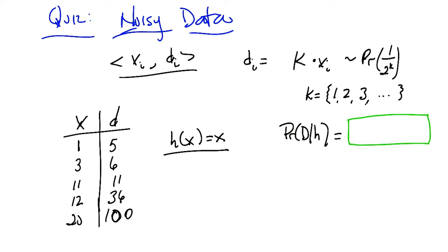Okay, how do you figure that out? Because the k that we would need, the multiplier would have to be 5, and so the probability for that multiplier is exactly 1 over 2 to the 5, which is 1 32nd. Okay.